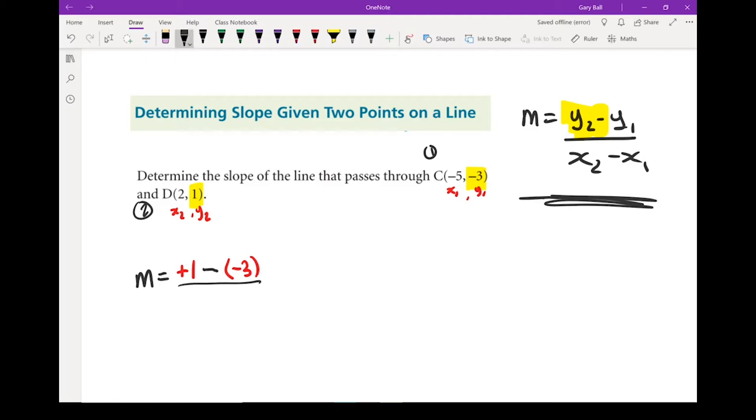Let's do the x's on the bottom. I'm starting with x2. So in this case, my x2 is 2. I've got a negative from the formula, and then I want x1, which in this case also happens to be negative. So that negative also has to be there.